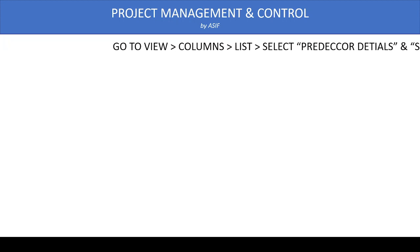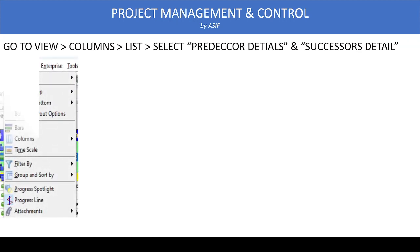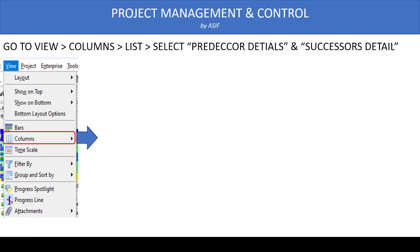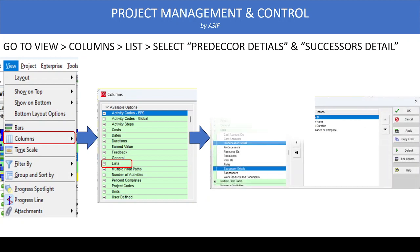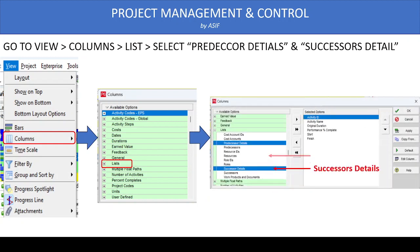For Method 1, we go to View, then Columns, and select the List option. From the list we select Predecessor Detail and Successor Detail and add these columns to our layout. Then we go through all activities one by one to see which are assigned with lag.